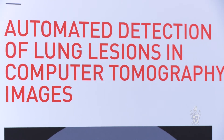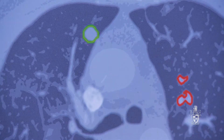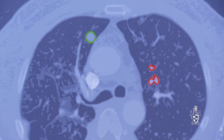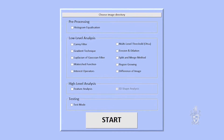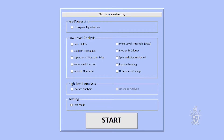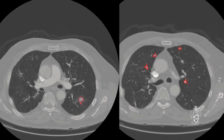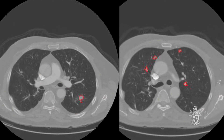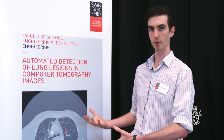My project is automated detection of lung lesions in computer tomography images. We take a set of images, we then use image processing on that, so we remove all the external structures except for the lungs, then we analyse the lungs and we try and find the cancer within that lung.